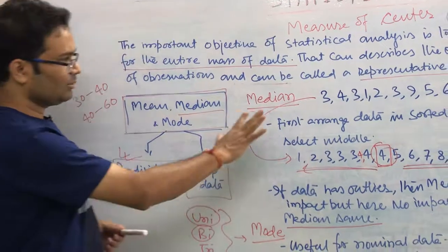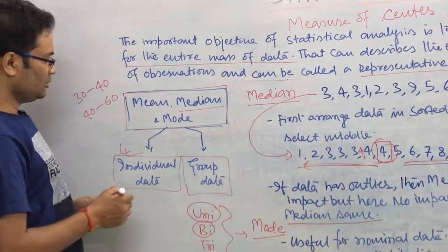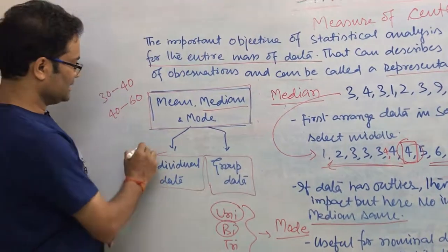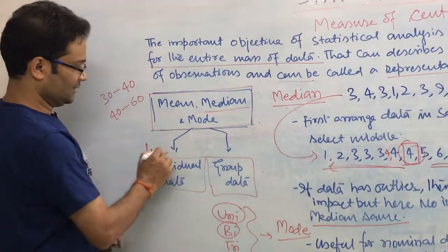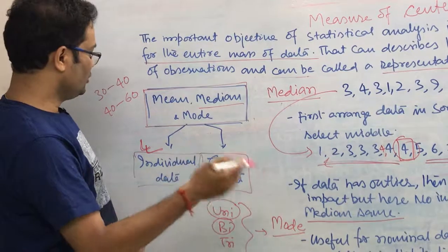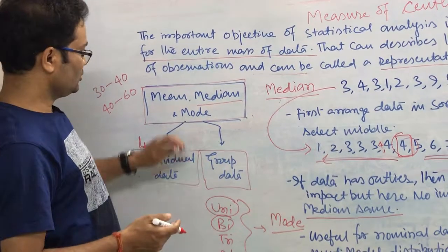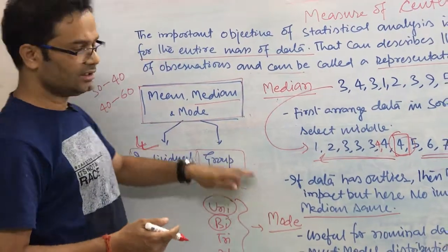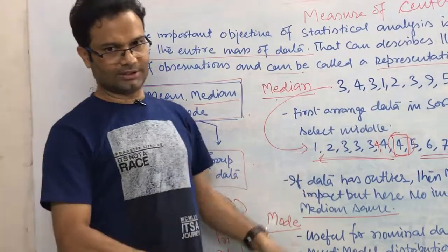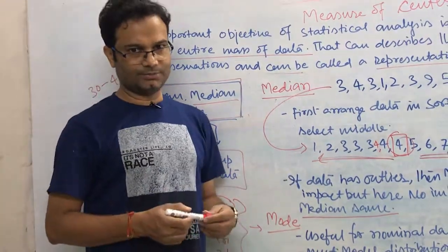So we discussed all three measures — mean, median, and mode — when the data is individual data. In the next video we will discuss when the data is grouped data. Thank you.